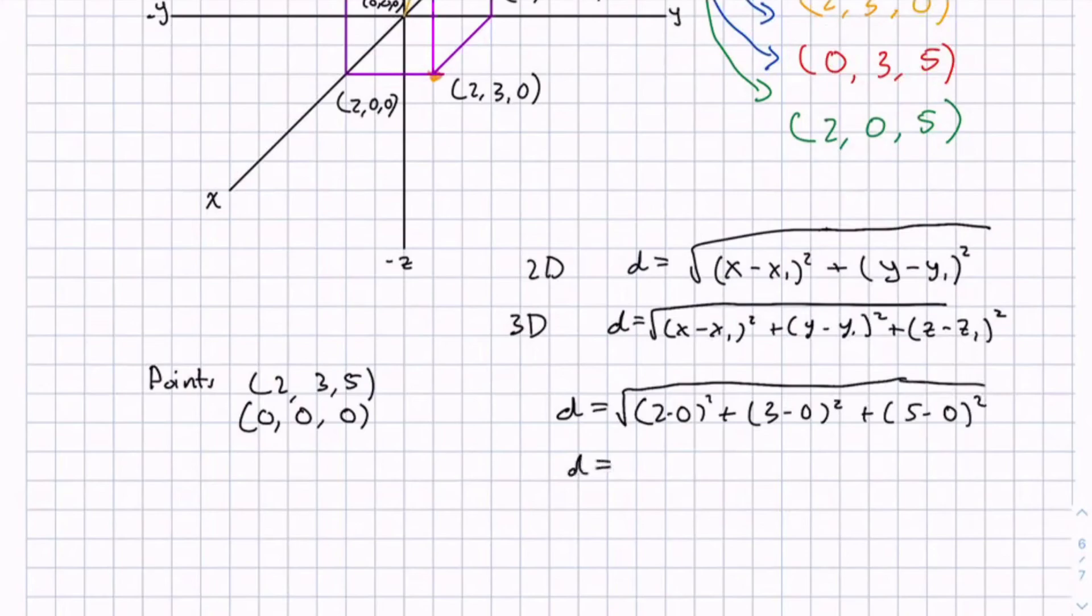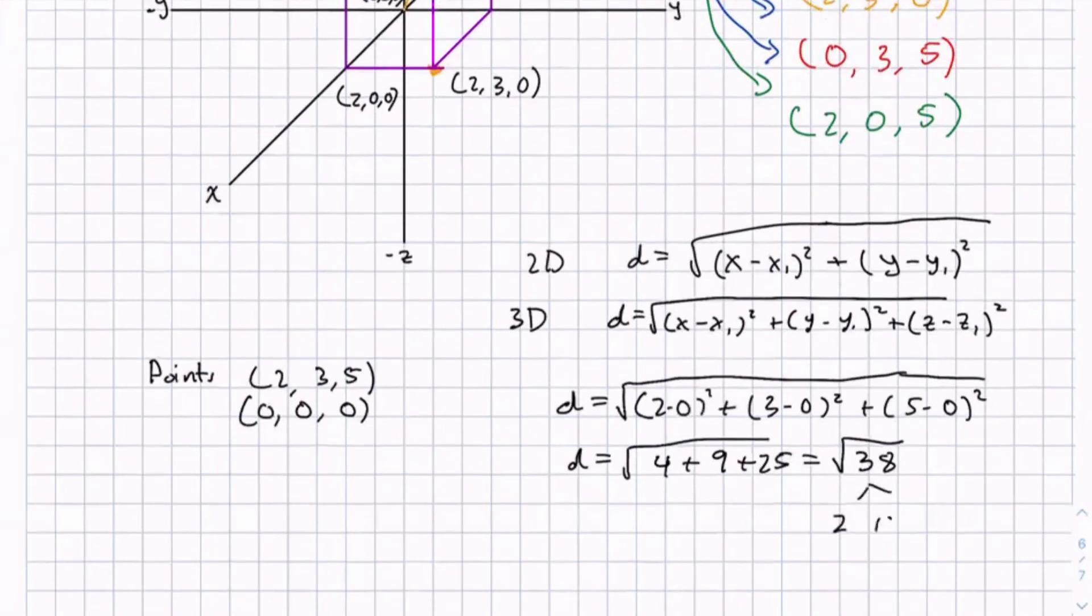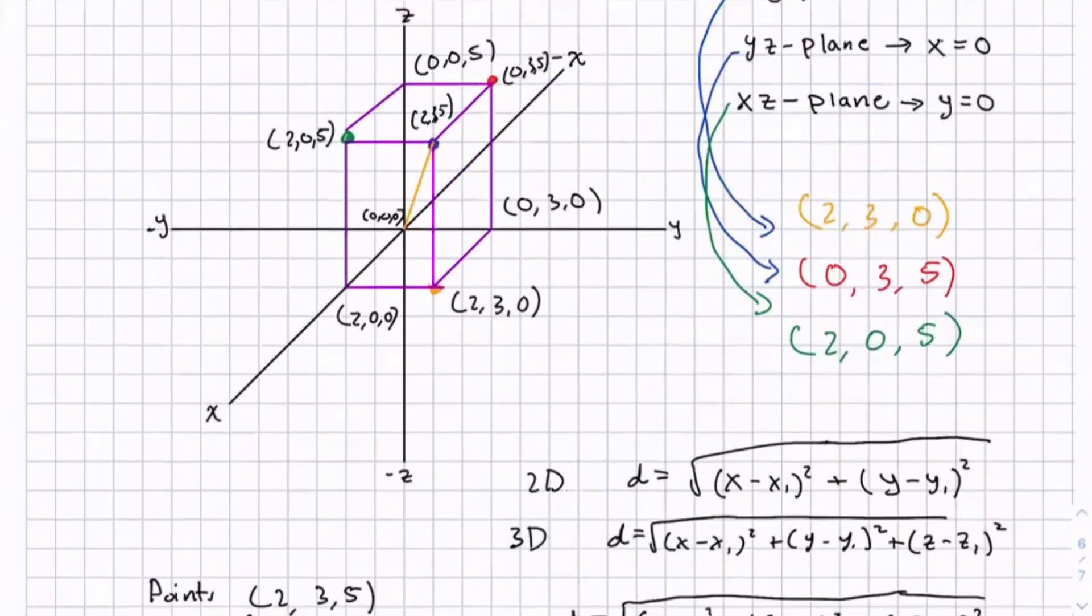The d equals the square root of 4 plus 9 plus 25 equals the square root of 38 and I don't think you can simplify this anymore. So you have the square root of 38 as the distance of the diagonal of this rectangle.